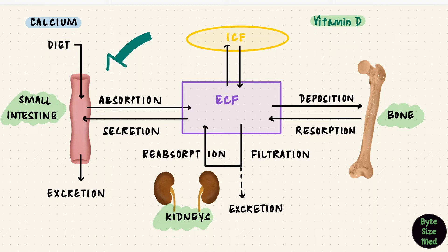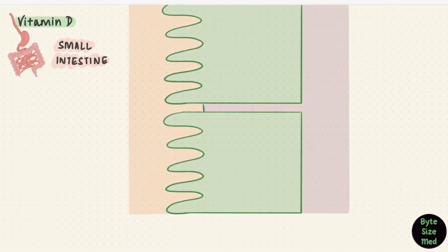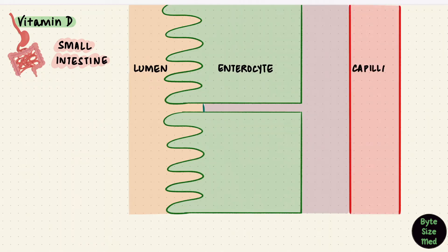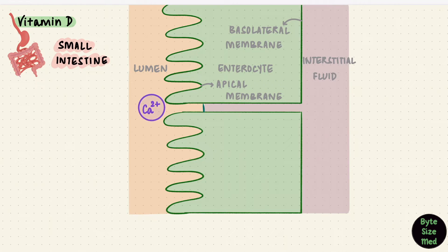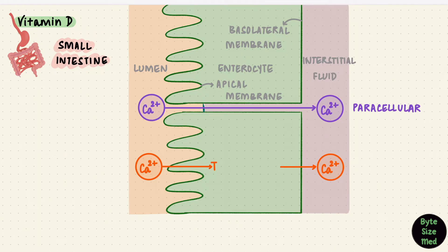Vitamin D acts on these three organs, the small intestine, the kidney, and bone to maintain calcium and phosphate homeostasis. But the main site of action is the small intestine. So how does vitamin D work here? Let's assume this is an intestinal cell, the enterocyte. This is the lumen, and here we have blood and capillaries. Between the cell and the capillary is interstitial fluid. An exchange between interstitial fluid and plasma happens across the capillary membranes. This is the apical membrane and this is the basolateral membrane. Calcium is absorbed by two methods, the paracellular pathway and the transcellular pathway. The paracellular pathway is between the cells and this isn't influenced by vitamin D.